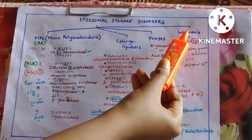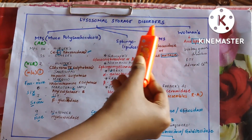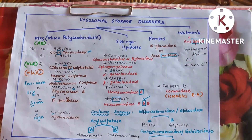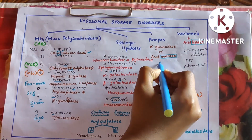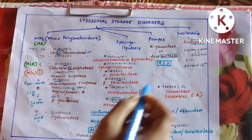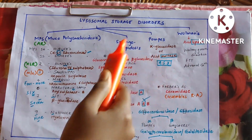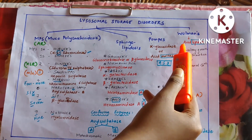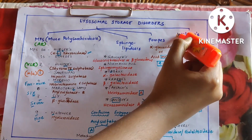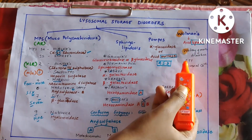Let us get into LSD, which are of four types: MPS, sphingolipidosis, Pompe's, and Wolman's. Pompe's and Wolman's are also under LSD, that is lysosomal storage disorders. Pompe's is also involved in glycogen storage disorder, so it comes in common for both GSD and LSD.